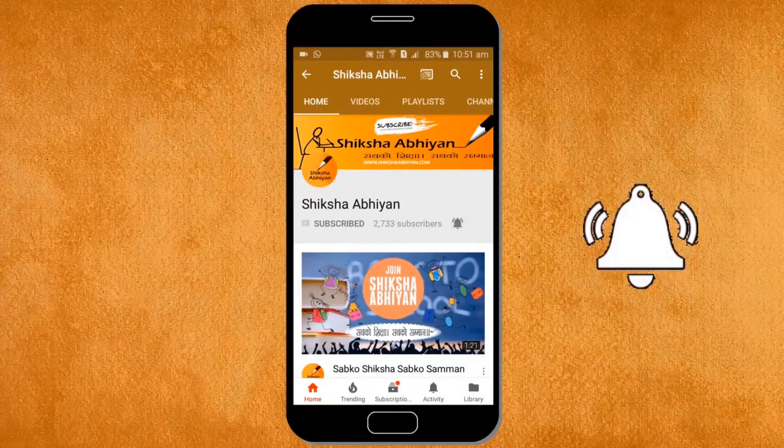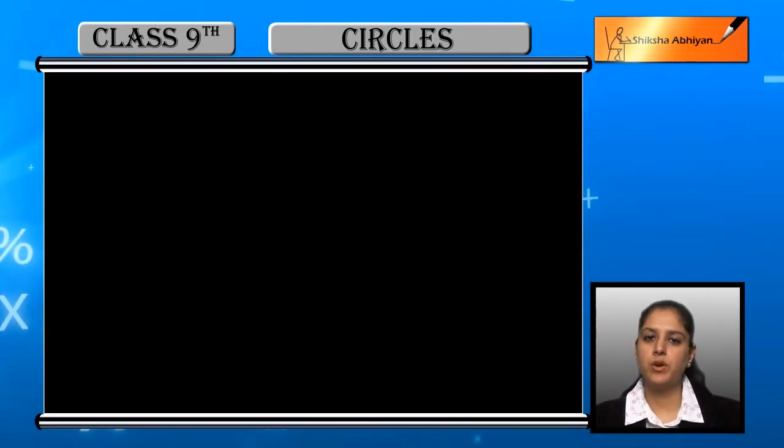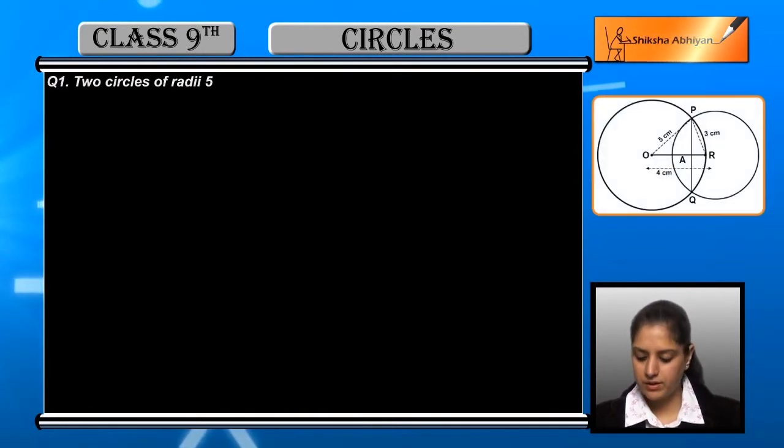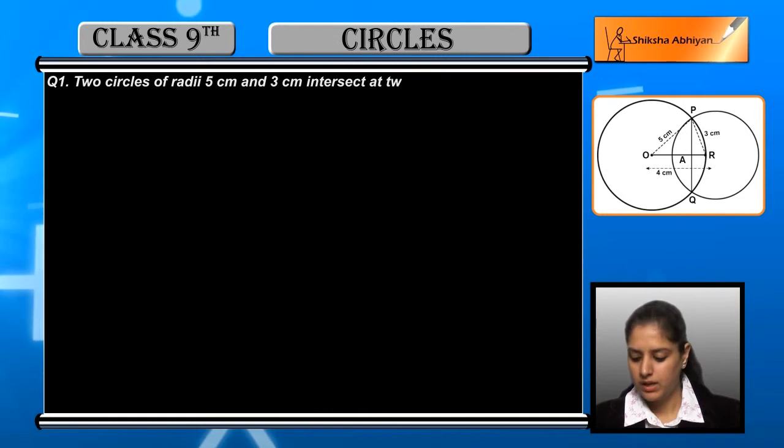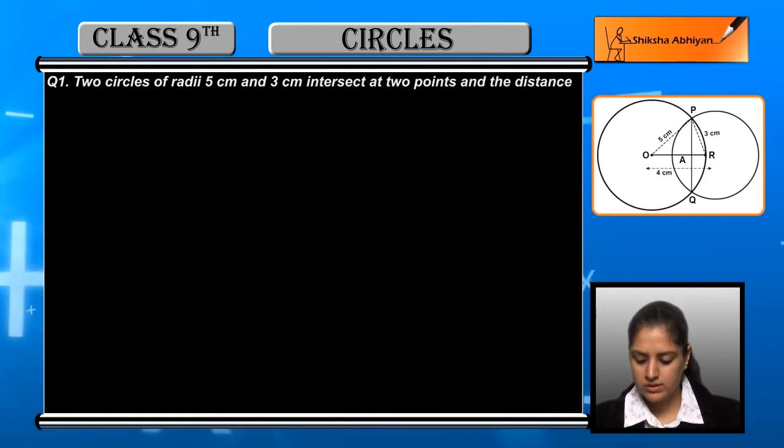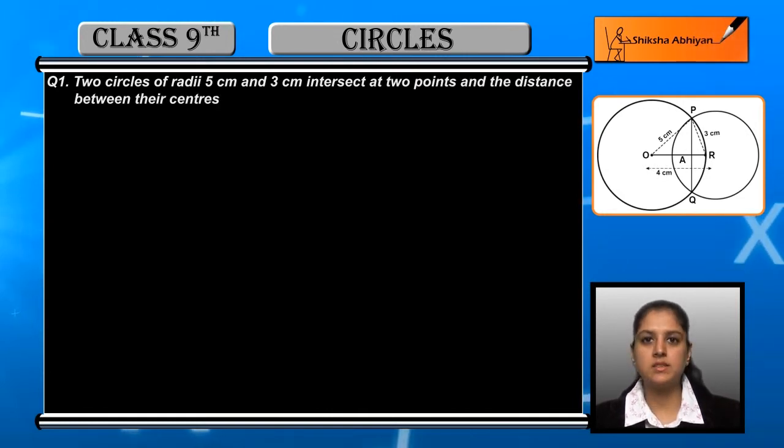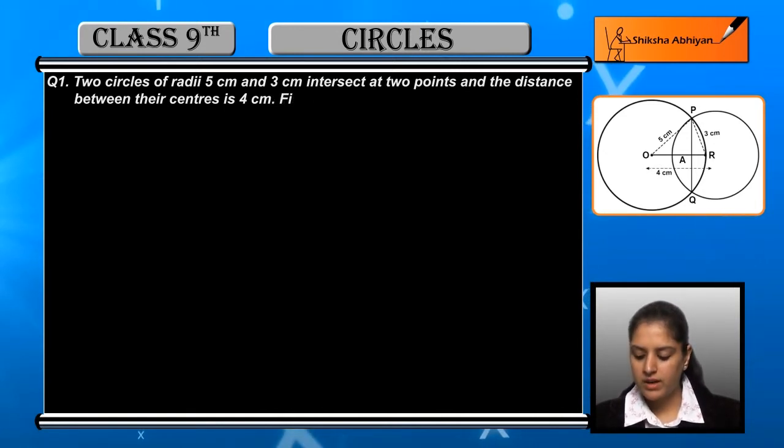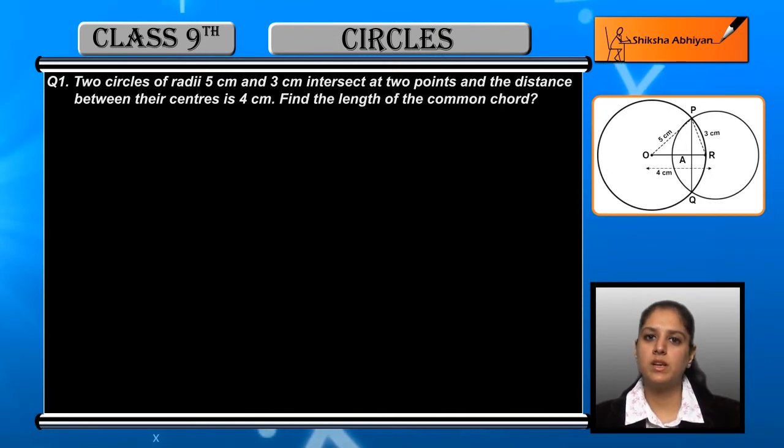Exercise 10.4, question number one: Two circles of radii 5 centimeters and 3 centimeters intersect at two points, and the distance between the centers is 4 centimeters. Two radii are given in two circles and the distance is 4 centimeters. Find the length of common chord.